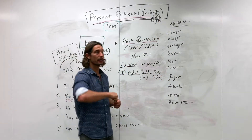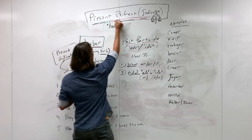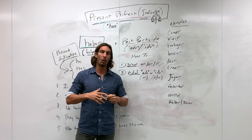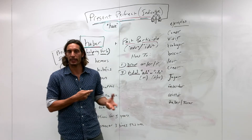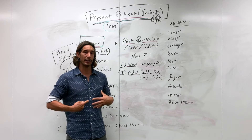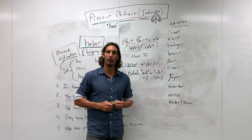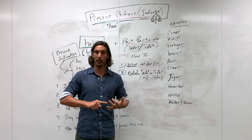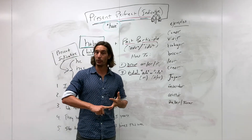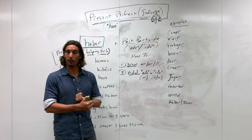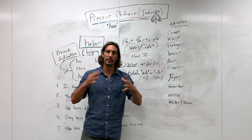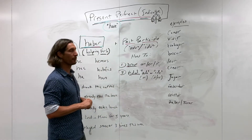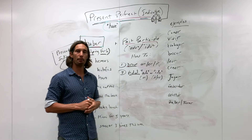What's up everyone. Today we have the present perfect indicative, and this is going to be our first introduction to a whole host of different perfect tenses. The present perfect indicative is the natural starting point for understanding perfect tenses. There's a wide range of them: the past perfect indicative, present perfect subjunctive, past perfect subjunctive, future perfect, and conditional perfect.